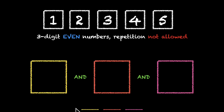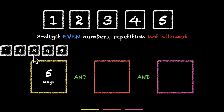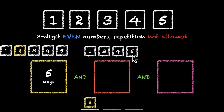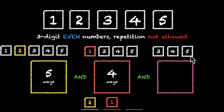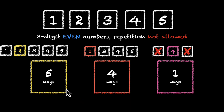Here are the three digits. Let's start with the yellow box — we have five options: 1, 2, 3, 4, 5. This time let's pick 2, an even number. For the orange box we have 1, 3, 4, and 5 — four options — let's pick 1. For the last pink box, we have 3, 4, and 5. We can't use 5, we can't use 3 — only one number, 4. So this box can be filled in only one way. Total: 5 × 4 × 1 = 20 ways.